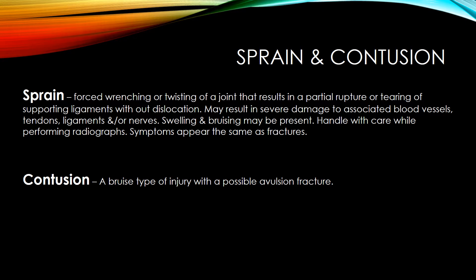A sprain is a forced, wrenching, or twisting of a joint that results in a partial rupture or tearing of supporting ligaments without dislocation. It may result in severe damage to associated blood vessels, tendons, ligaments, and/or nerves. Swelling and bruising may be present. Handle with care while performing radiographs, as symptoms appear to be the same as fractures. A contusion is a bruised type of injury with a possible avulsion fracture.